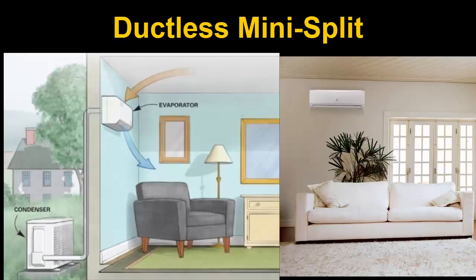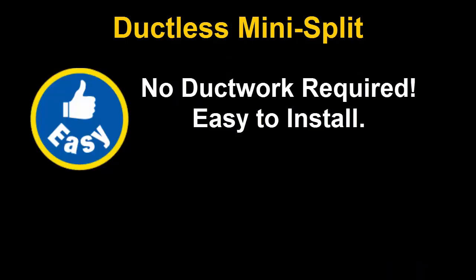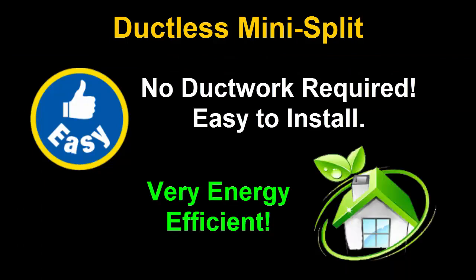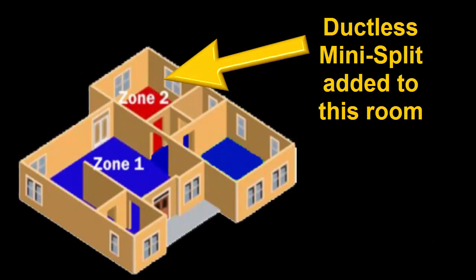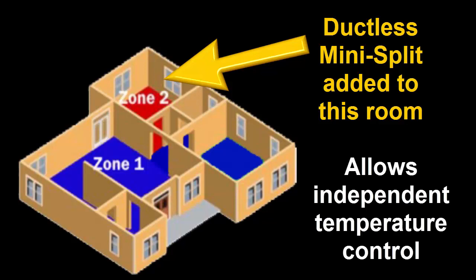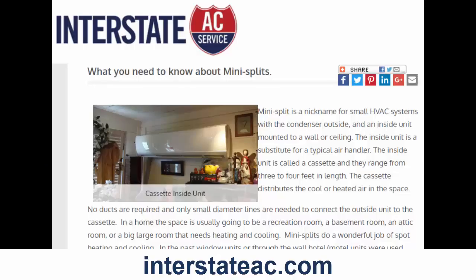Spot treatments: consider installing a ductless mini-split system in the rooms which are always too hot in summer and too cold in winter. As the name implies, they do not require ductwork, so they're easy to install and they're super efficient. This will effectively make the rooms that are fed by the mini-split system their own zones, allowing you to control their temperature independently of the rest of the house. Check out our many previous posts on mini-split systems.